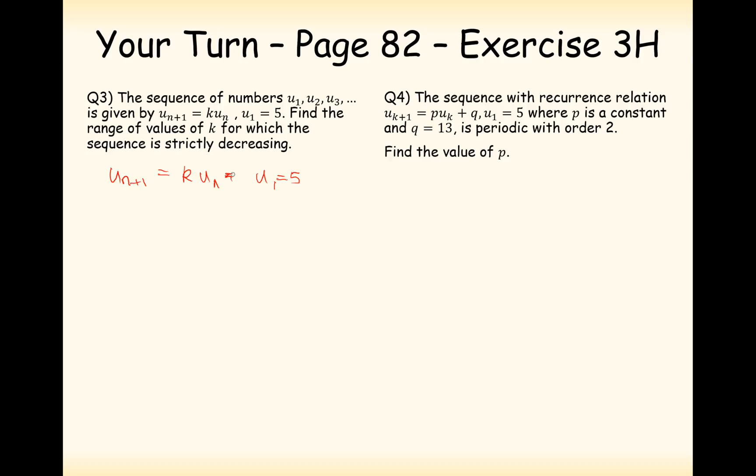Well, if k was 1, then it would just be 5 every time. So it can't be 1. So it has to be less than 1, otherwise it's going to increase every time. And if it was 0, then the next term would be 0, but then every term from then on must be 0 as well. So if you've got any number in between 0 and 1, then that's going to effectively multiply it by a fraction each time. And if you continually multiply by a fraction, then you're going to get a number that tends towards 0, or it gets smaller each time.